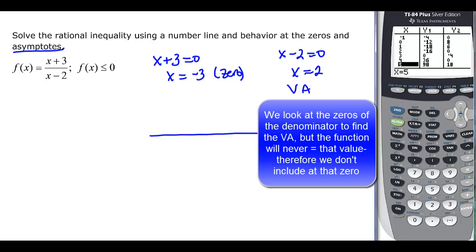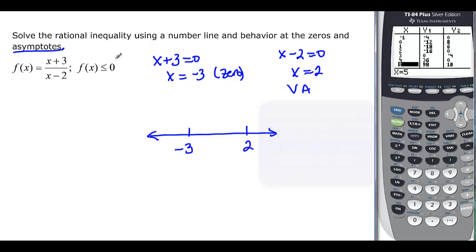So on my number line here, I have negative 3 and I have 2. My inequality says less than or equal to. So that means I can include my 0. So it might be, in fact, I'll change my color here. It might be this direction, but it might be this direction. But you never can include vertical asymptotes. So I have to have a parenthesis there on either side of it, because it will never be 2. It will get close, never be there.